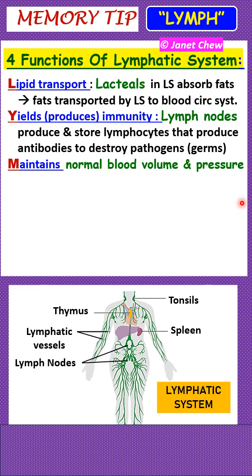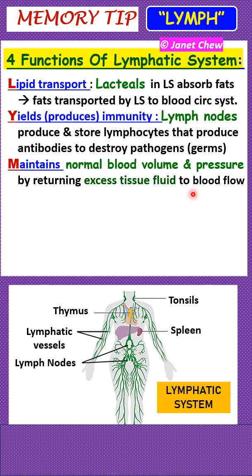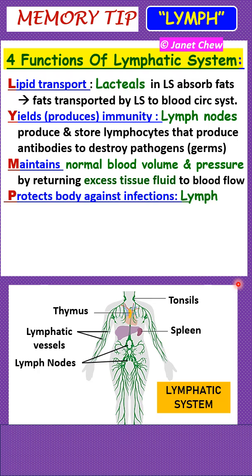Thirdly, M is for maintain. The lymphatic system maintains normal blood volume and pressure by returning excess tissue fluid back to the blood flow, so that blood volume is maintained at the normal value. When blood volume is maintained, blood pressure is also maintained. The tissue fluid from the intercellular spaces is carried by the lymphatic system back into the bloodstream.